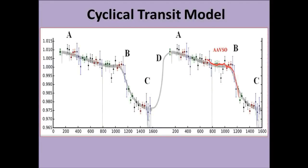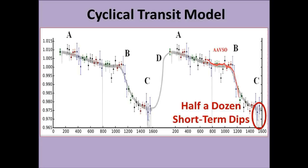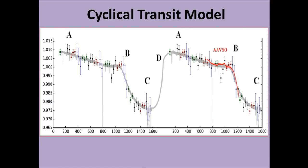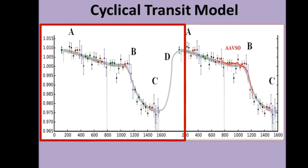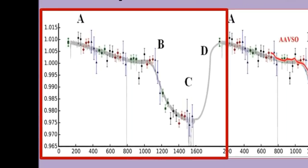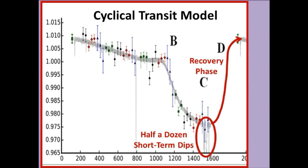As a reminder, this is the cyclical transit model that Bruce Gary and his colleague came up with using the old Kepler data light curve. They believe that the light variations of Tabby Star is a repeating process as shown in this diagram. Let's take a look at just one full cycle highlighted in the red box. They believe that we are now in a recovery phase just after the short-term dips occurred this spring and summer.